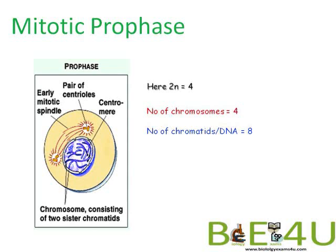This is mitotic prophase. The chromosome number of this cell is 4. Since prophase is after S phase, the DNA has duplicated. Therefore the number of chromosomes is 4 and the number of chromatids is 8, because each chromosome has two chromatids held at the centromere.